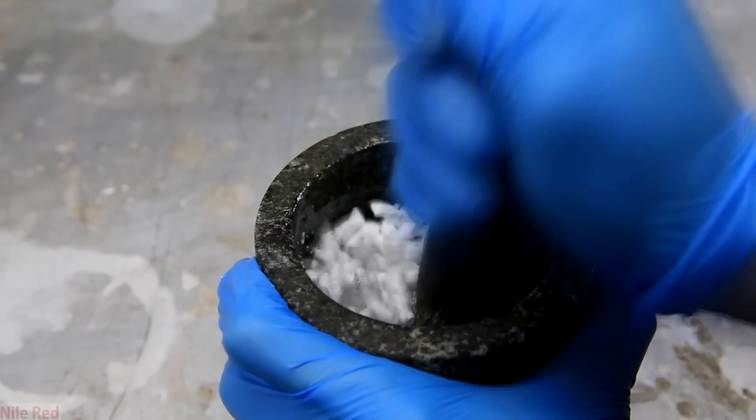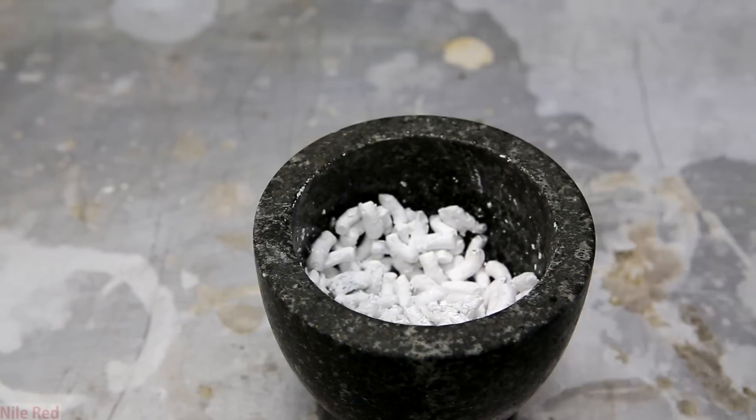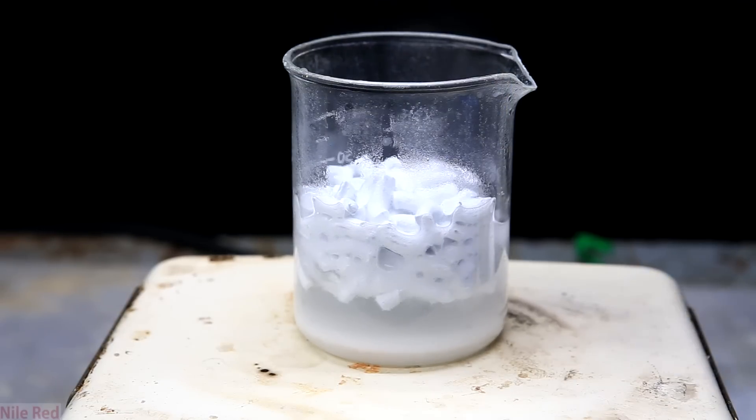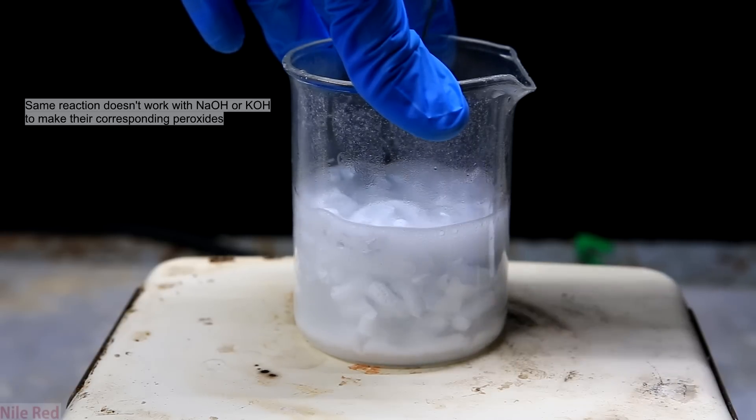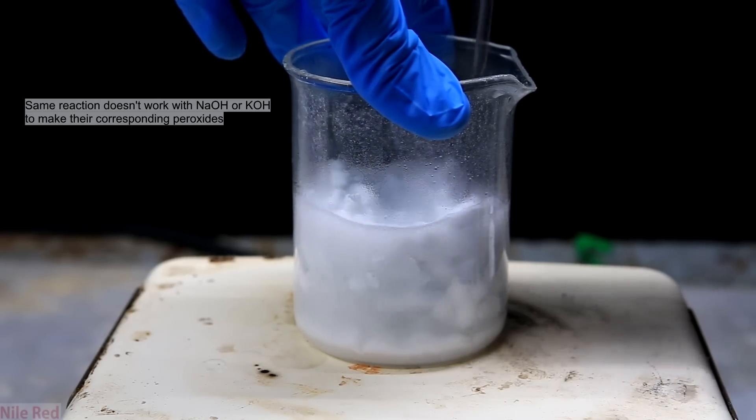To take this one step further though, the lithium hydroxide can act as a precursor to something called lithium peroxide. The peroxide can be pretty easily made by reacting the lithium hydroxide with some hydrogen peroxide.